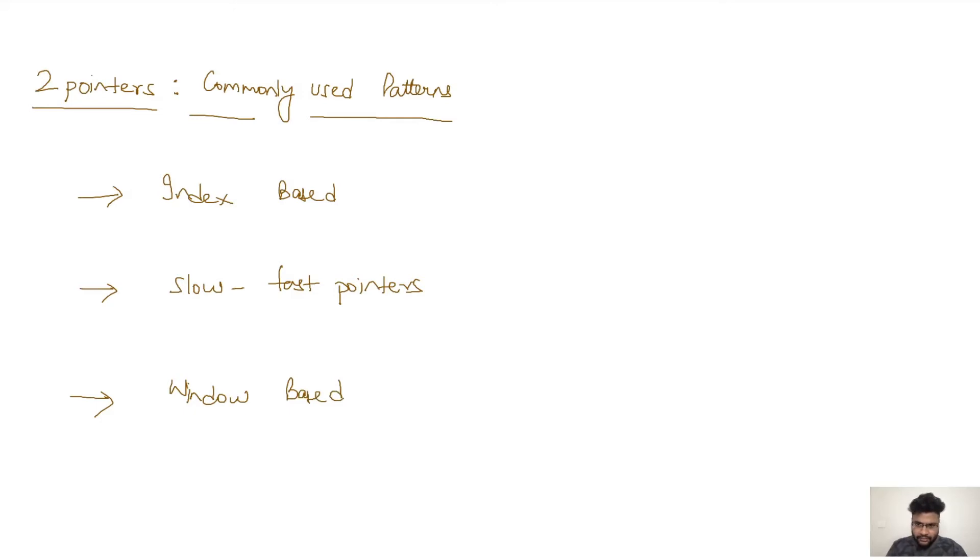Now slow fast and window based are basically what we call equidirectional pointers, and index based is basically when we are moving in opposite direction.